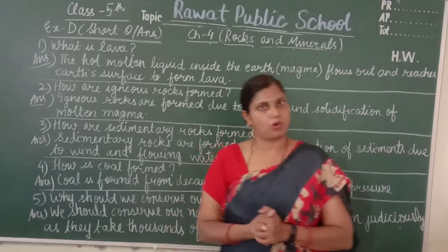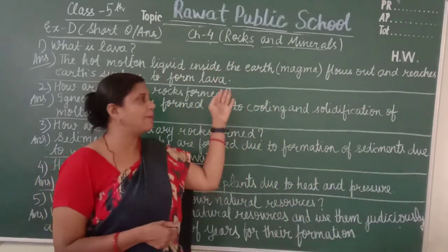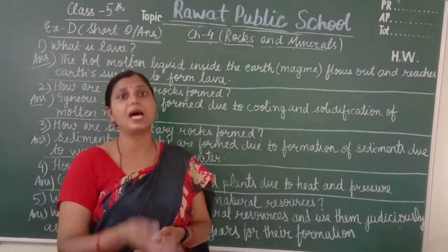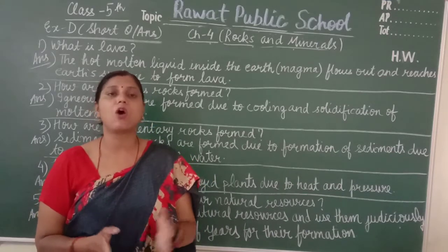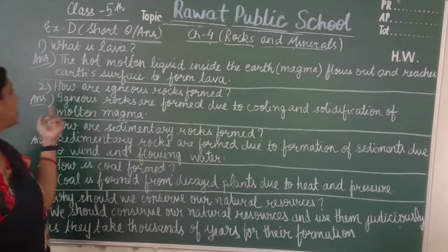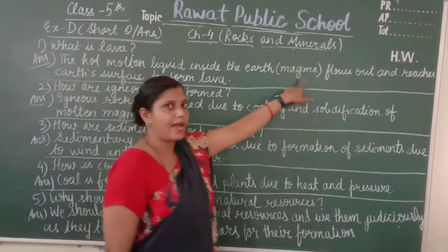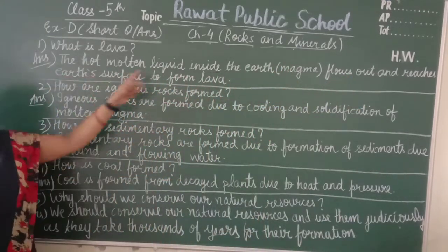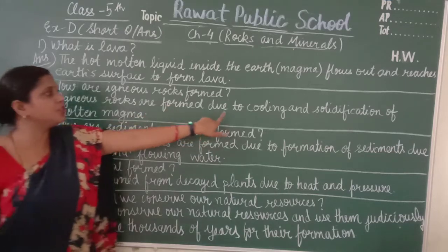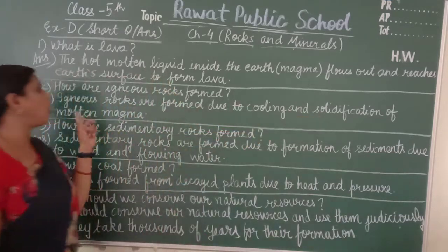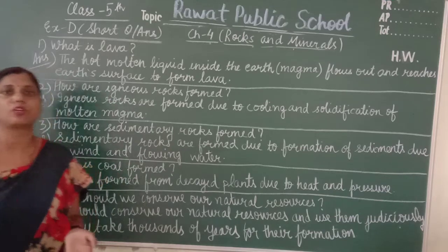Question two is: how are igneous rocks formed? The hot molten liquid inside the earth, which is called magma, flows out and reaches the earth's surface to form lava. Igneous rocks are formed due to the cooling and solidification of this molten material.